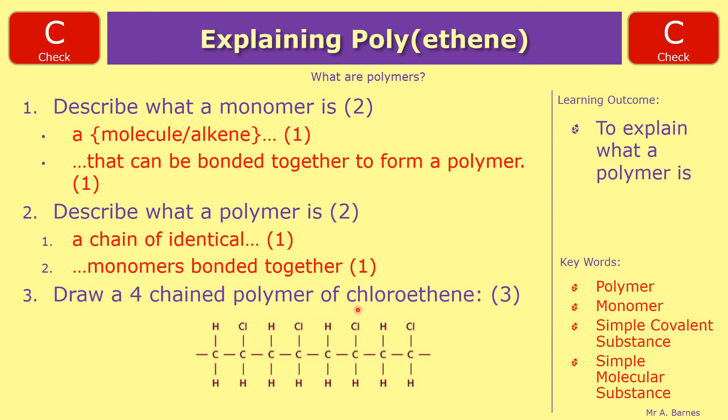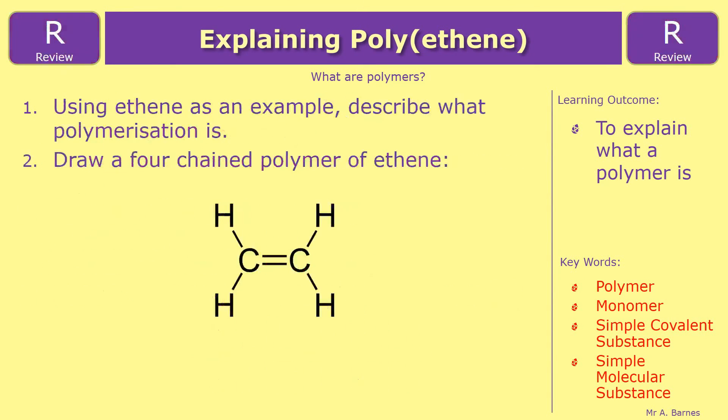Okay, hopefully that's made sense for you then. Let's have a look at the review question which ends this video. Using ethene as an example, describe what polymerization is. Draw a four chained polymer of ethene. So that's bringing together everything we've done today.